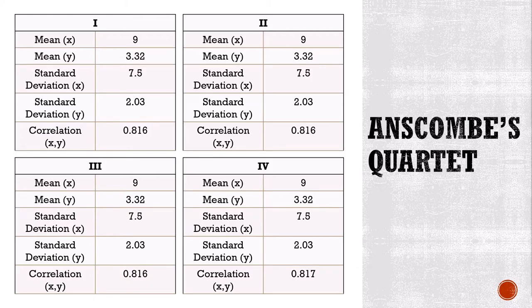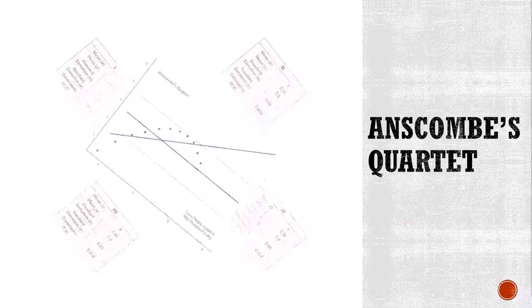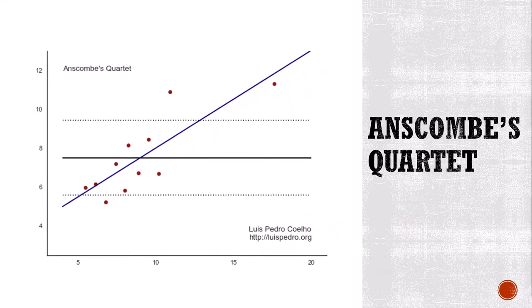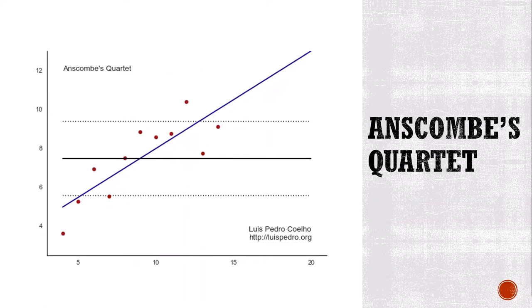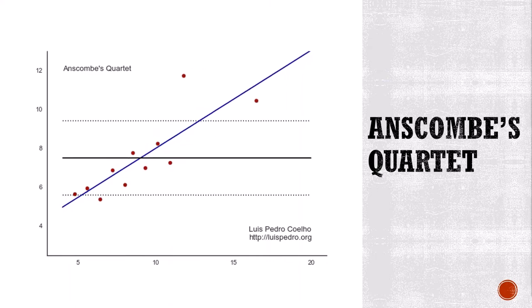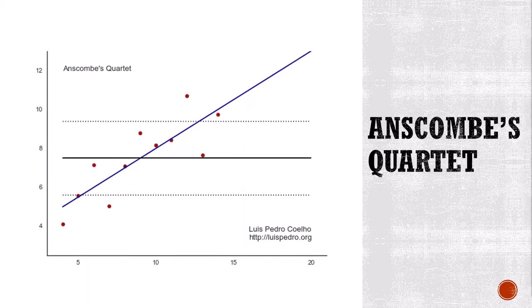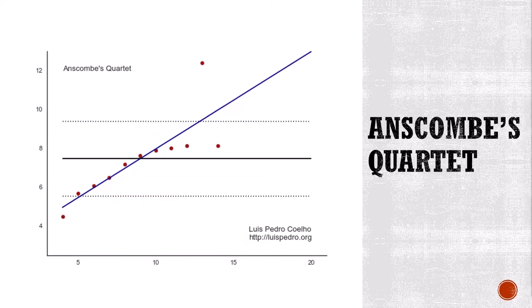So from this point of view, these data sets are indistinguishable from one another. When we graph them, however, a different story emerges. We immediately see outliers, curves, and various linear relationships. Graphed, these data sets each tell a completely different story — we realize they are very different from each other. As Anscombe pointed out, these graphs put the lie to the idea that we can understand data without visualizing it.